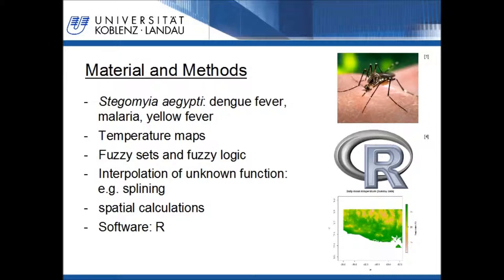The habitat analysis presented in this talk is performed for a species called the yellow fever mosquito. It is a vector responsible for, inter alia, the transmission of dengue fever, malaria, and yellow fever. In the described step of the habitat quality analysis, we will estimate the quality of a location according to the daily mean temperature. Therefore, data representing the spatial distribution of the temperature, e.g. temperature maps, are needed.